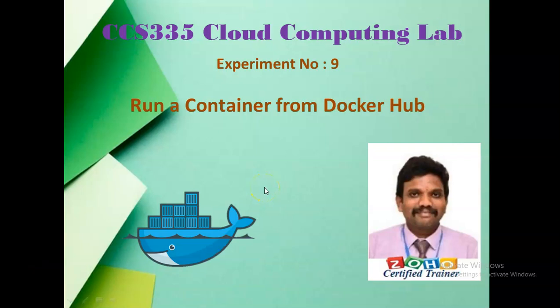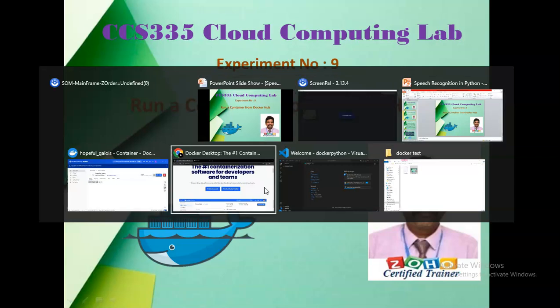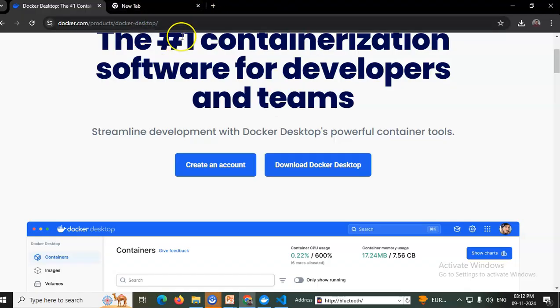CCS 335 Cloud Computing Lab, Experiment Number Nine: Run a container from Docker Hub. Initially you can create an account in Docker Hub, so go to your web browser and go to the Docker Hub website.